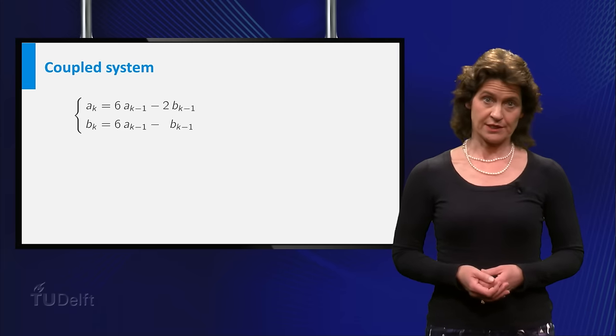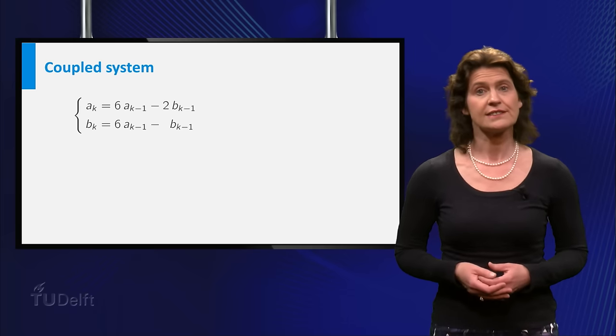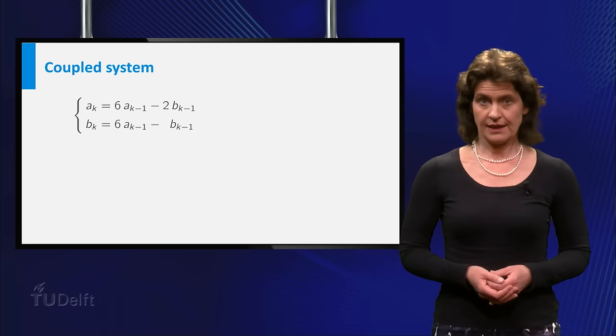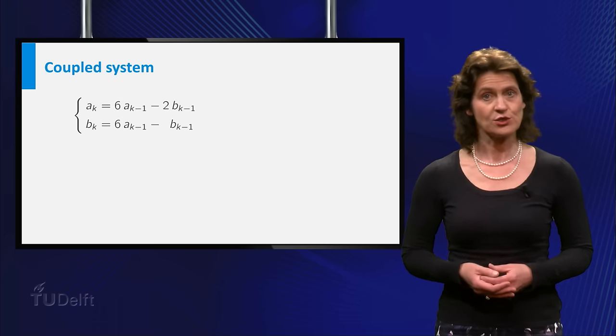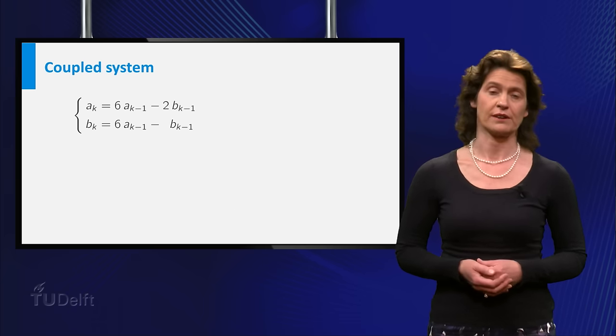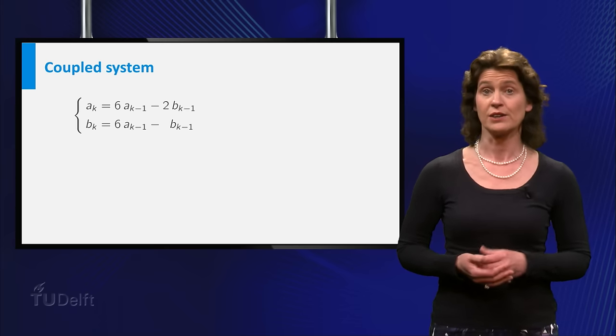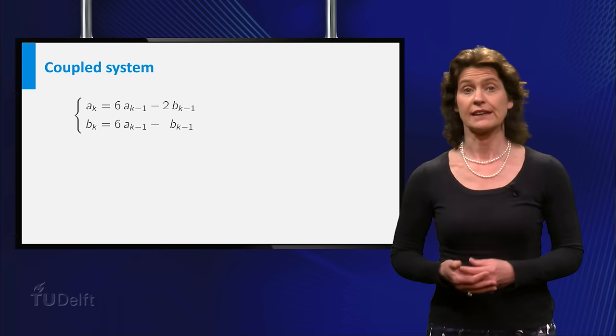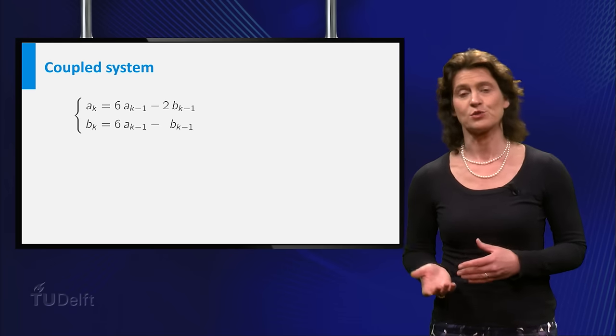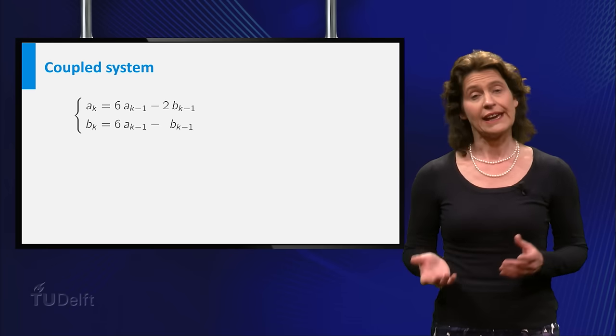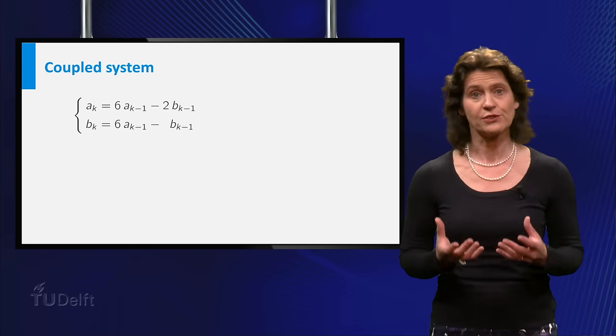In another situation, the recurrence relations could be more complicated. For instance, they might look like this. Ak is equal to 6 times Ak minus 1 minus 2 times Bk minus 1. And Bk is equal to 6 times Ak minus 1 minus Bk minus 1. Here you need both Ak minus 1 and Bk minus 1 to compute either Ak or Bk. This is called a coupled system.